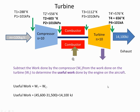As before, the useful work is the work done by the turbine minus the work done by the compressor. The compressor is taking 31,500 kilojoules of work. The turbine produces 45,600 kilojoules, so 31,500 of that is used to drive the compressor, and the difference — 14,100 kilojoules — is what goes out the back as kinetic energy, which is going to give us our thrust.